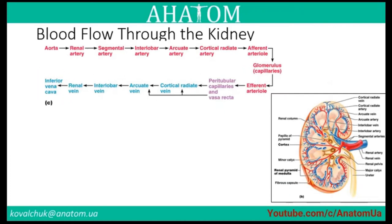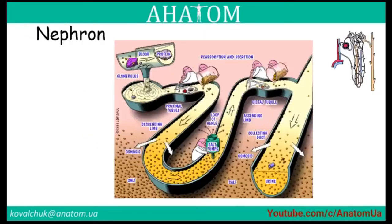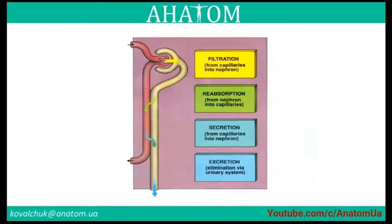The nephron: the kidney contains approximately 1.2 million nephrons, which are the functional units of the kidney. A nephron consists of blood vessels and internal tubules. The main processes in the nephron are filtration, reabsorption, secretion, and excretion, shown in different colors in the schematic for visualization.